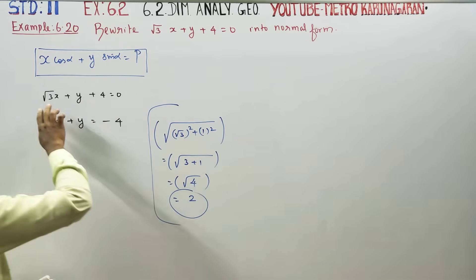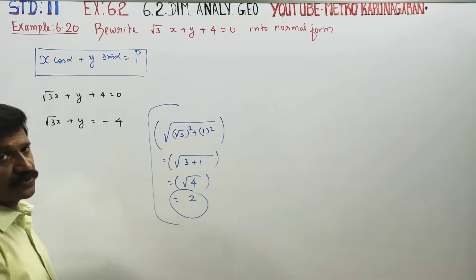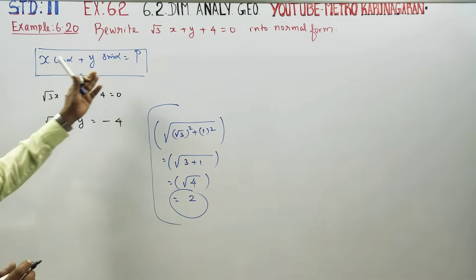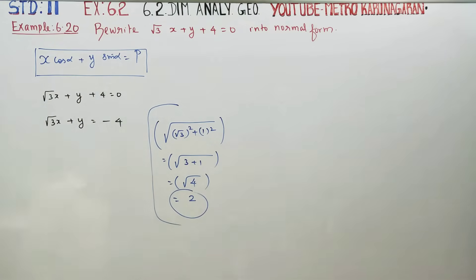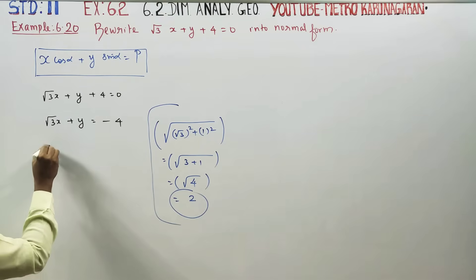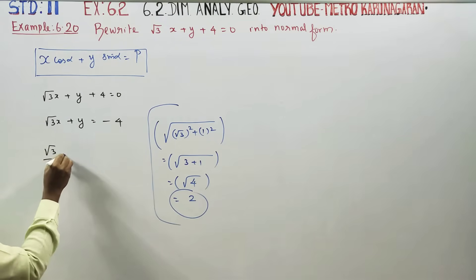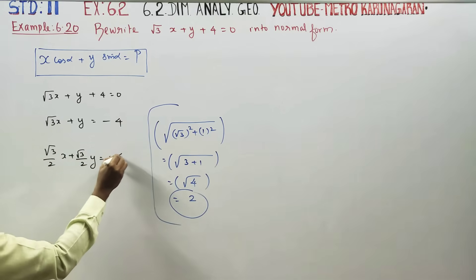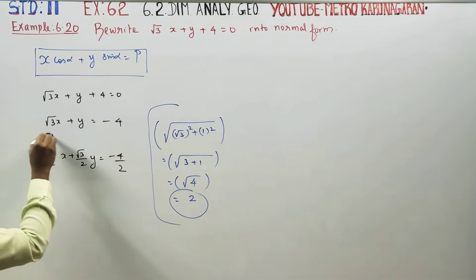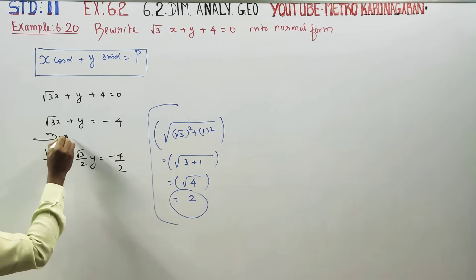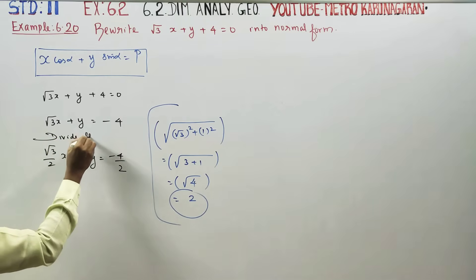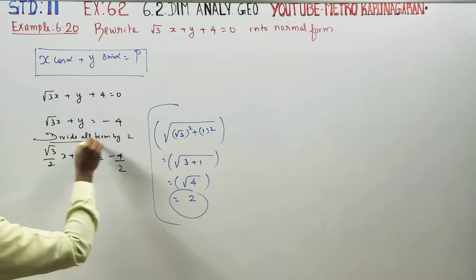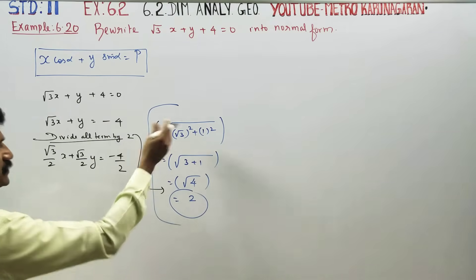We divide all terms by √(coefficient of x² + coefficient of y²), which gives cos α and sin α. So dividing: (√3/2)x + (1/2)y = −4/2, which simplifies to (√3/2)x + (1/2)y = −2.